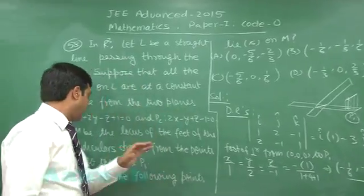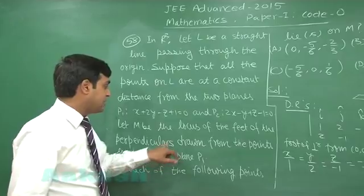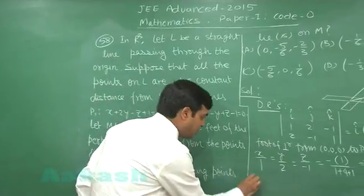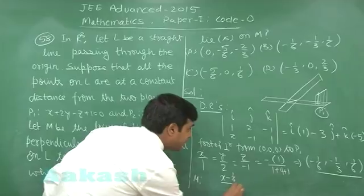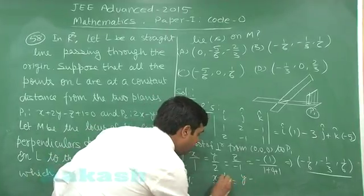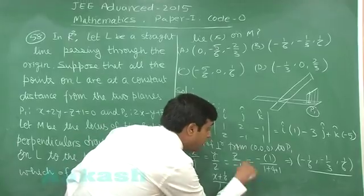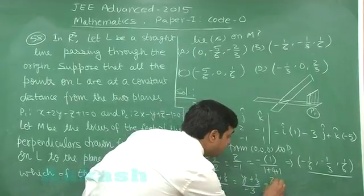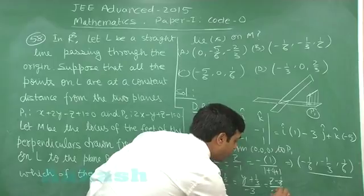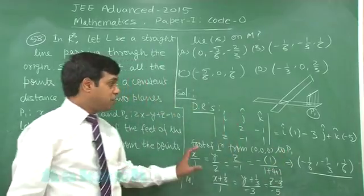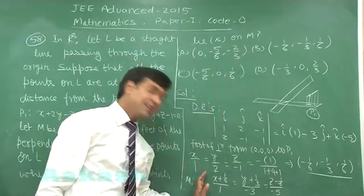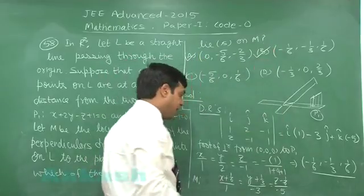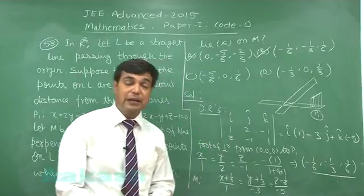Coming back to the question: let M be the locus of feet of perpendiculars drawn from points on L to plane P1. Clearly the equation of M is: (x − (−1/6))/1 = (y − (−1/3))/(−3) = (z − 1/6)/(−5). On substituting the given four options into this equation of the line, we find that options A and B satisfy the equation. Let us go to the next one.